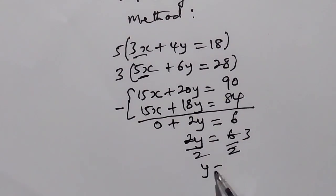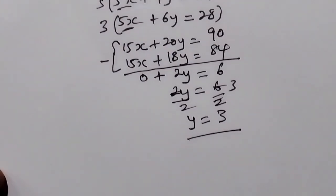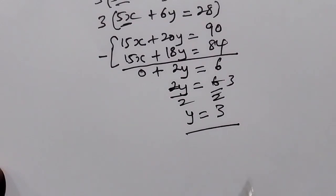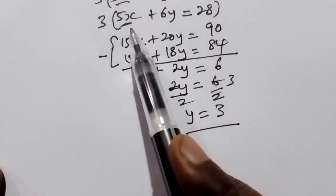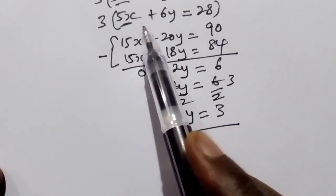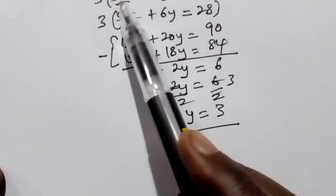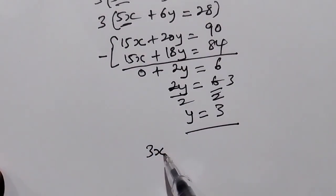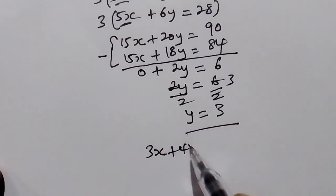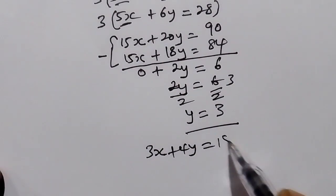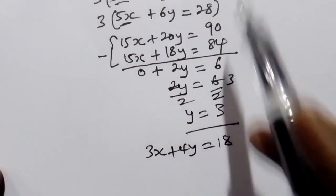y is equal to 3. How can we find the value of x? We can use the first equation here, 3x plus 4y is equal to 18.